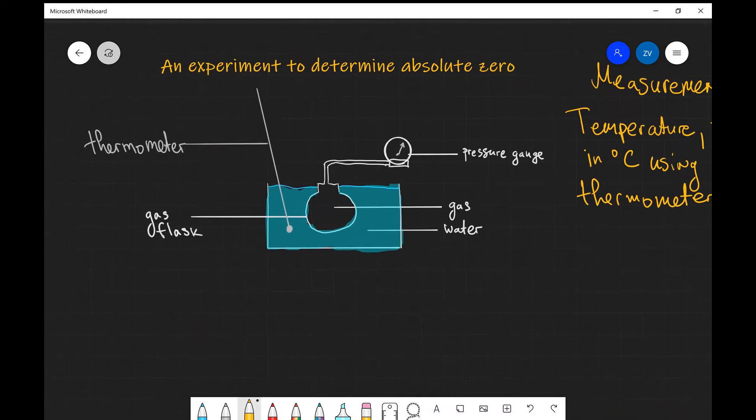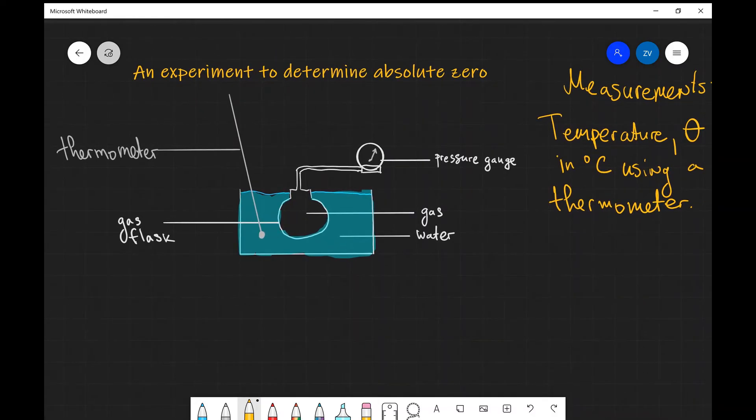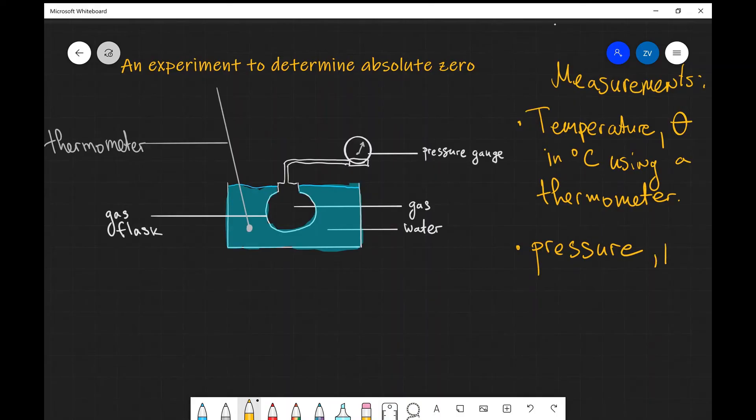Additionally we're also going to be measuring the pressure, so that's our second measurement. Pressure P. Now the units will depend on the pressure gauge that you have in the lab, normally it's in kilopascals however it can vary quite a bit between different standards and this will be done using a pressure gauge.